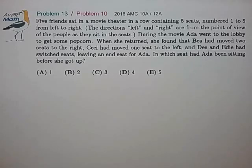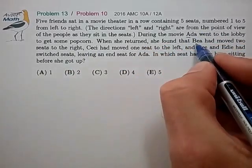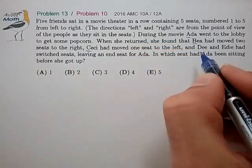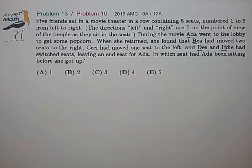Now in all AMC problems, you'll notice that the words they usually provide suggest some very obvious symbols. So we're going to use A, B, C, D, and E to represent the five people in the problem.